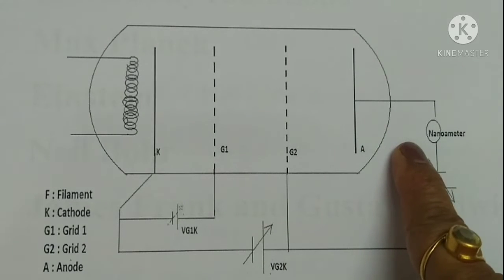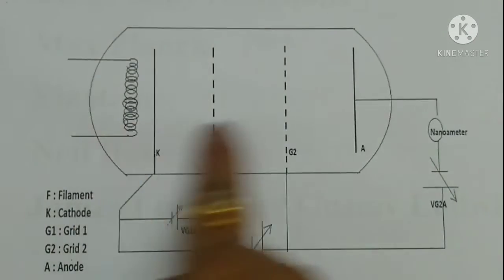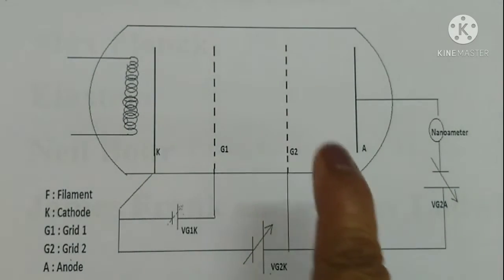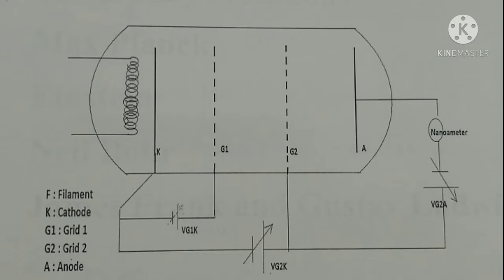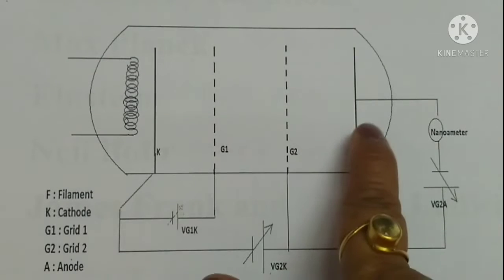This tube is filled with argon gas. Frank-Hertz originally used mercury vapor. Usually a monoatomic gas, for example argon, neon, or mercury, can be filled in the chamber in order to prevent complications involving molecular transitions.